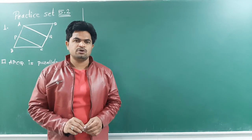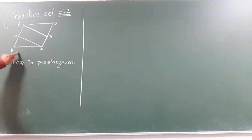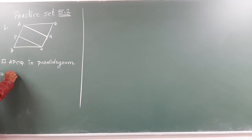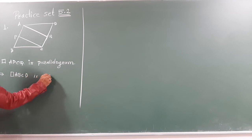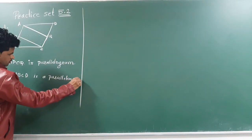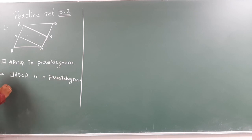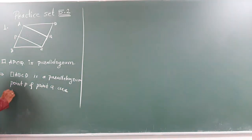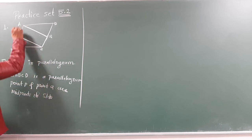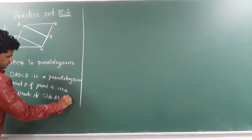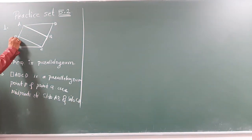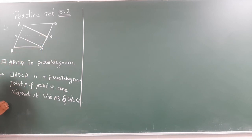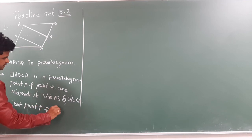Practice set 5.2, problem number 1. We have given that quadrilateral ABCD is a parallelogram. Point P and point Q are the midpoints of side AB and side CD. After joining the points, join point P and point Q.